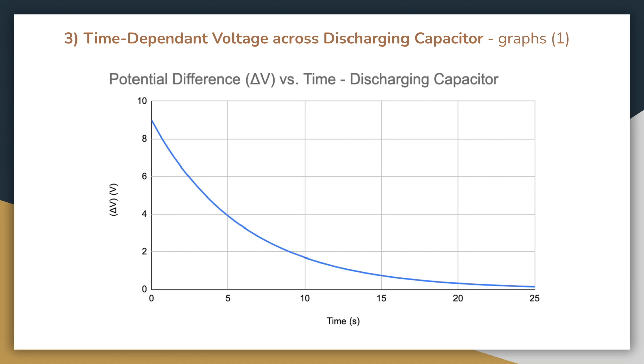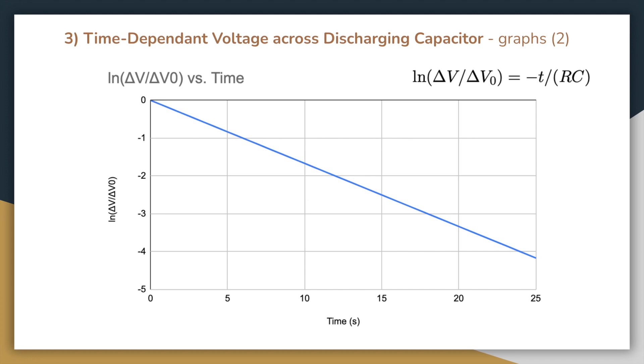This graph of potential difference versus time resembles an exponential decay graph. If we linearize this data by graphing the natural log of potential difference over delta V0, we get this graph. This, as expected, is a linear graph for which we have the lab-specific formula which I showed you at the beginning of this presentation, and which is also shown here above.